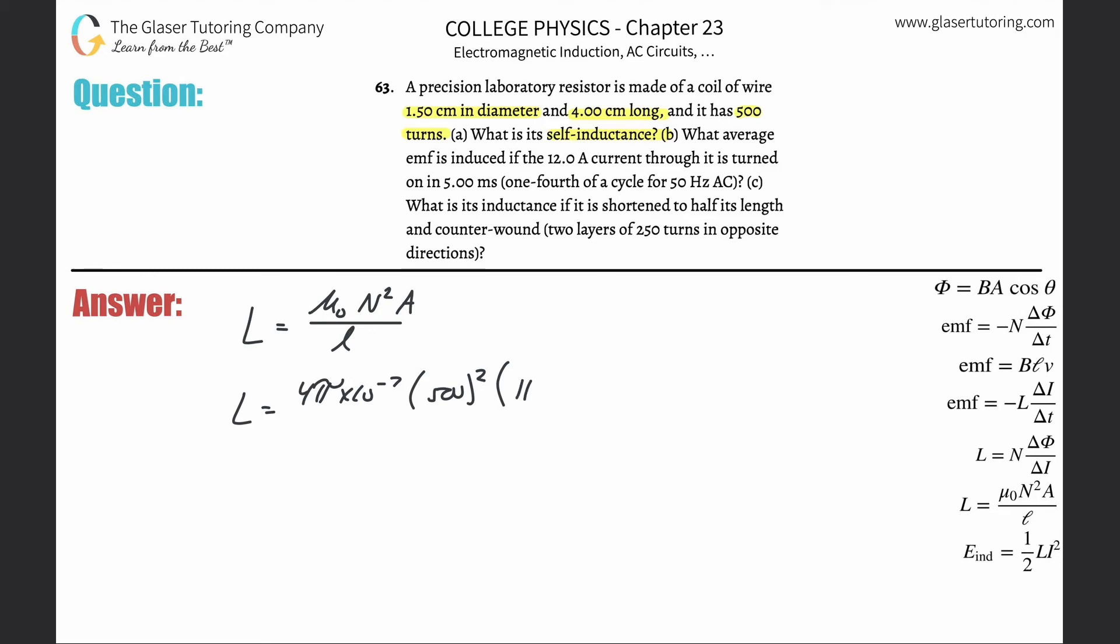The area is π times r². They gave the diameter, so the radius is half that. This is in centimeters but we need meters, so multiply by 10⁻². Don't forget to square it. Then divide by the length, which is 4 centimeters, so multiply by 10⁻².